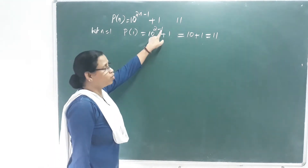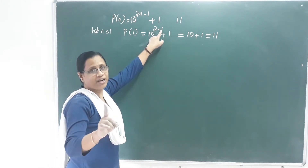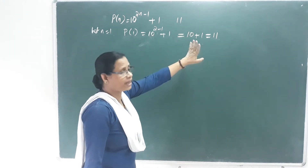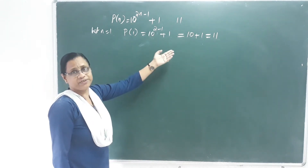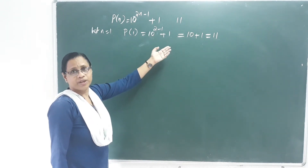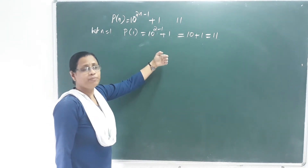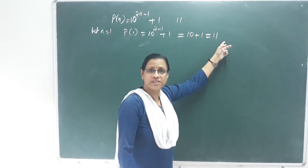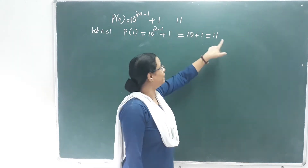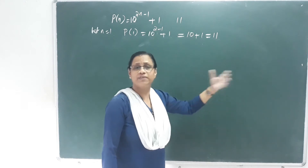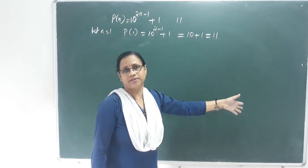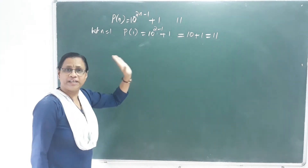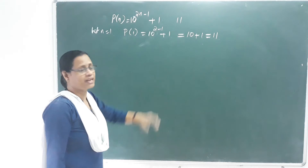That is 10 raised to 2 minus 1 plus 1, equal to 11. Which is true — P of 1 is true. The reason: 11 is a multiple of 11, so it is divisible. P of 1 is true.